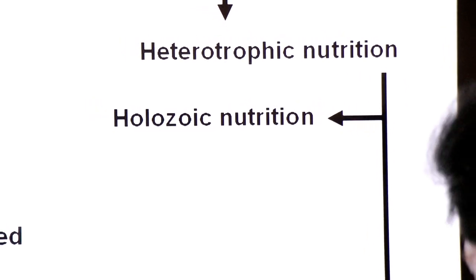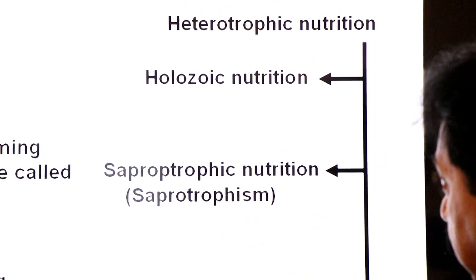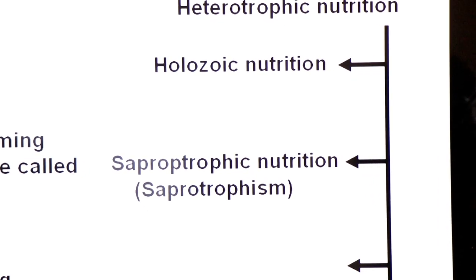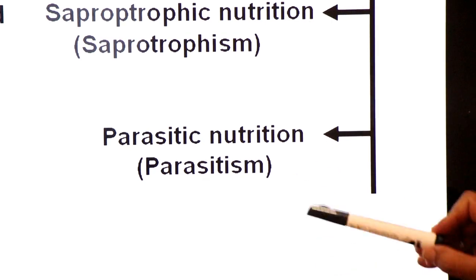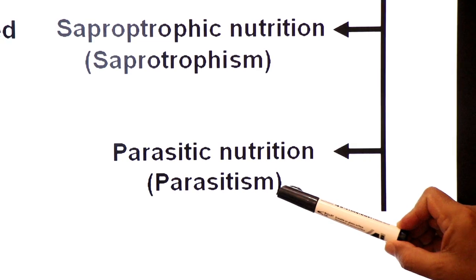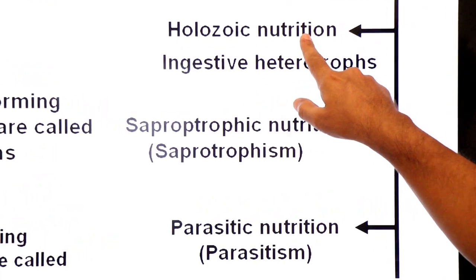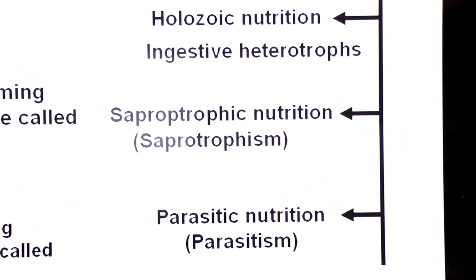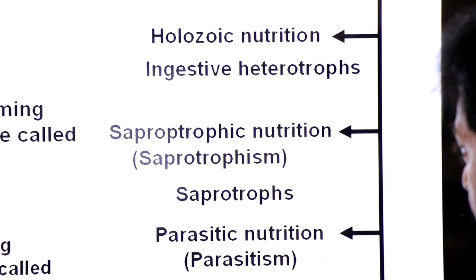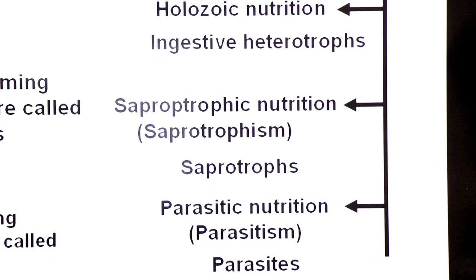Types of heterotrophic nutrition: first, holozoic nutrition — complete animal-like nutrition. Second, saprotrophic nutrition, also called saprotrophism, in which organisms obtain food from dead organic matter. Third, parasitic nutrition, also called parasitism, in which food is obtained from the body or tissues of a living host. Organisms performing holozoic nutrition are called ingestive heterotrophs; those obtaining food from dead organic matter are called saprotrophs; and those obtaining food parasitically are called parasites.